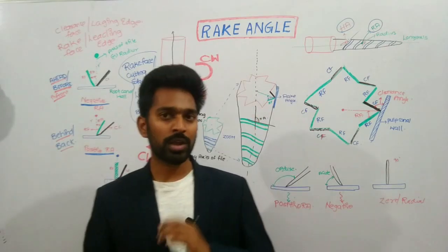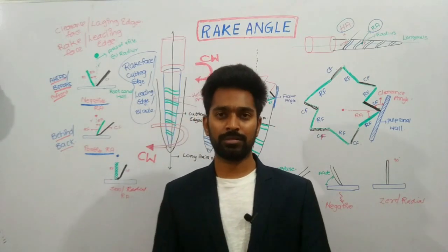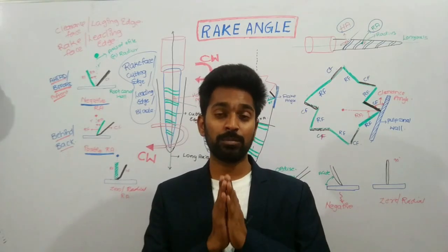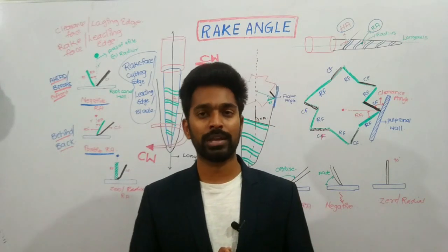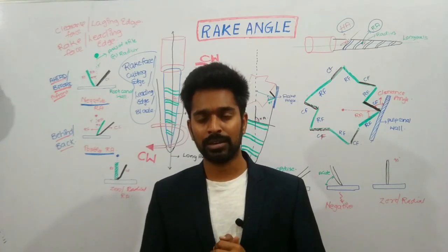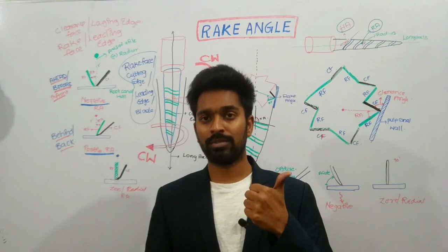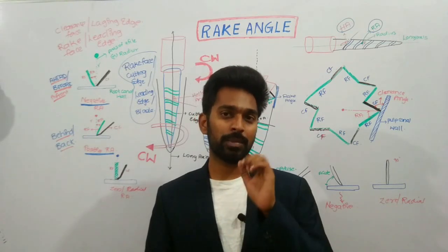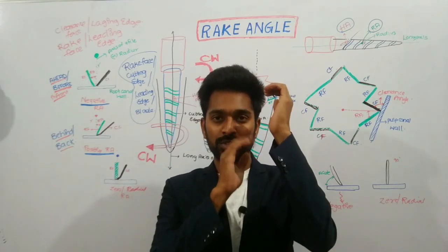Coming to the rake angle — why should we know about the rake angle? What is the importance of rake angle in the field of endodontics? Not only in endodontics, but any rotary cutting instrument which has blades has a rake angle. The positive rake angle is directly proportional to the cutting action of the file. If a bur or a rotary file has a positive rake angle, it means it has more cutting efficiency. Whereas if it has a negative rake angle, it means it has less cutting efficiency.